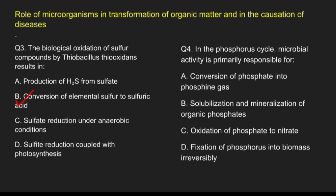Question 4: In the phosphorus cycle, microbial activity is primarily responsible for — Option A, conversion of phosphate into phosphine gas; Option B, solubilization and mineralization of organic phosphate; Option C, oxidation of phosphate to nitrate; Option D, fixation of phosphorus into biomass irreversibly. The correct answer is option B, solubilization and mineralization of inorganic phosphate.